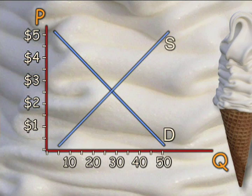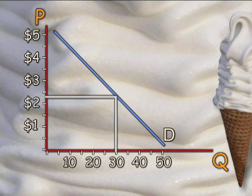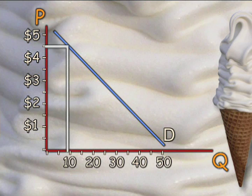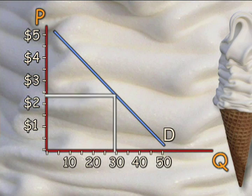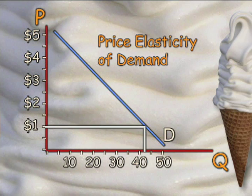Take ice cream cones. The more they cost, the fewer people buy. That's what the slope means. As the price goes up, fewer and fewer ice cream cones are demanded. As it goes down, the quantity demanded increases. So consumers respond to price. They exhibit price elasticity of demand.